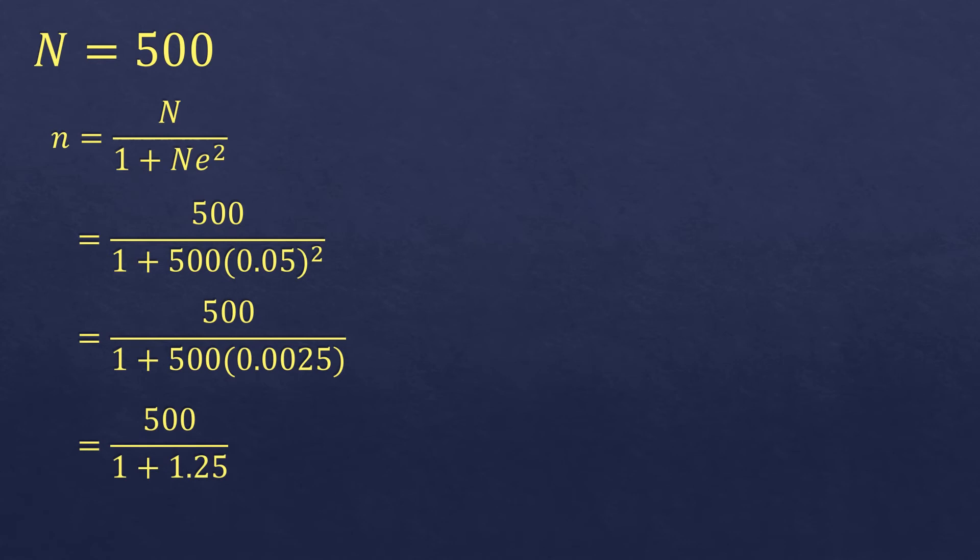Then we are going to add 1 plus 1.25, it will be 2.25. Then we divide 500 by 2.25, it will be 222.222 and so on. It's actually a repeating 2.